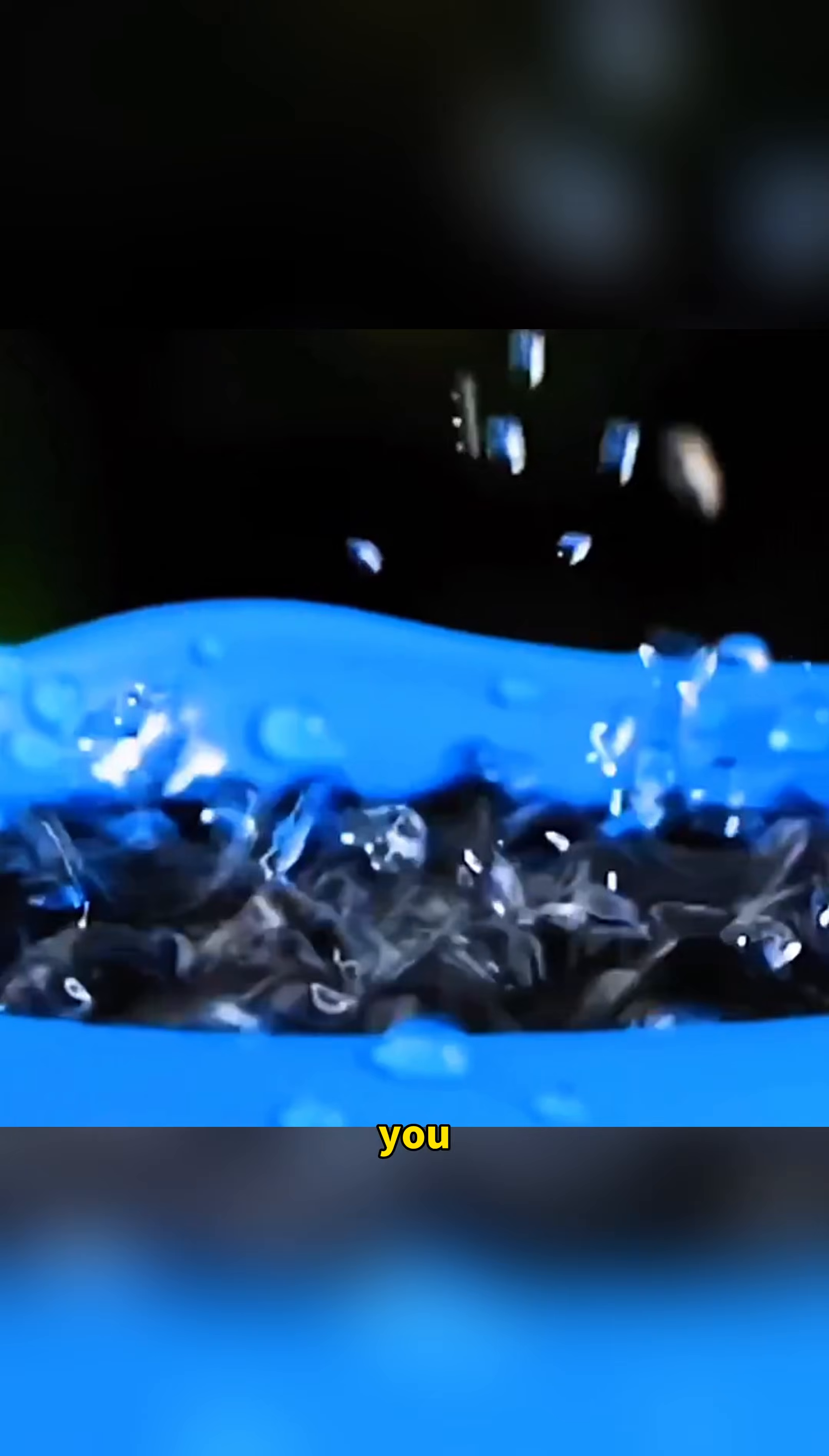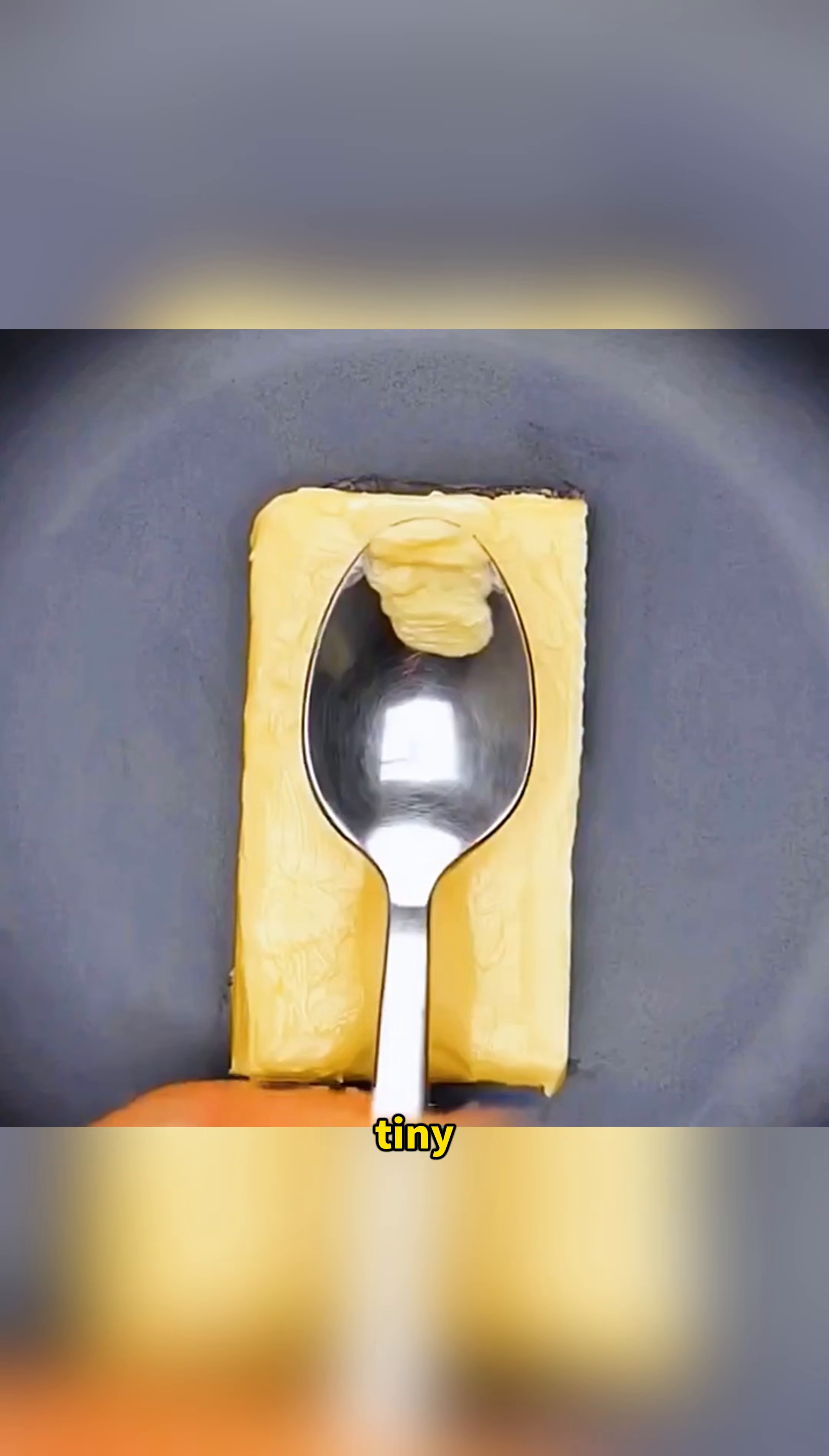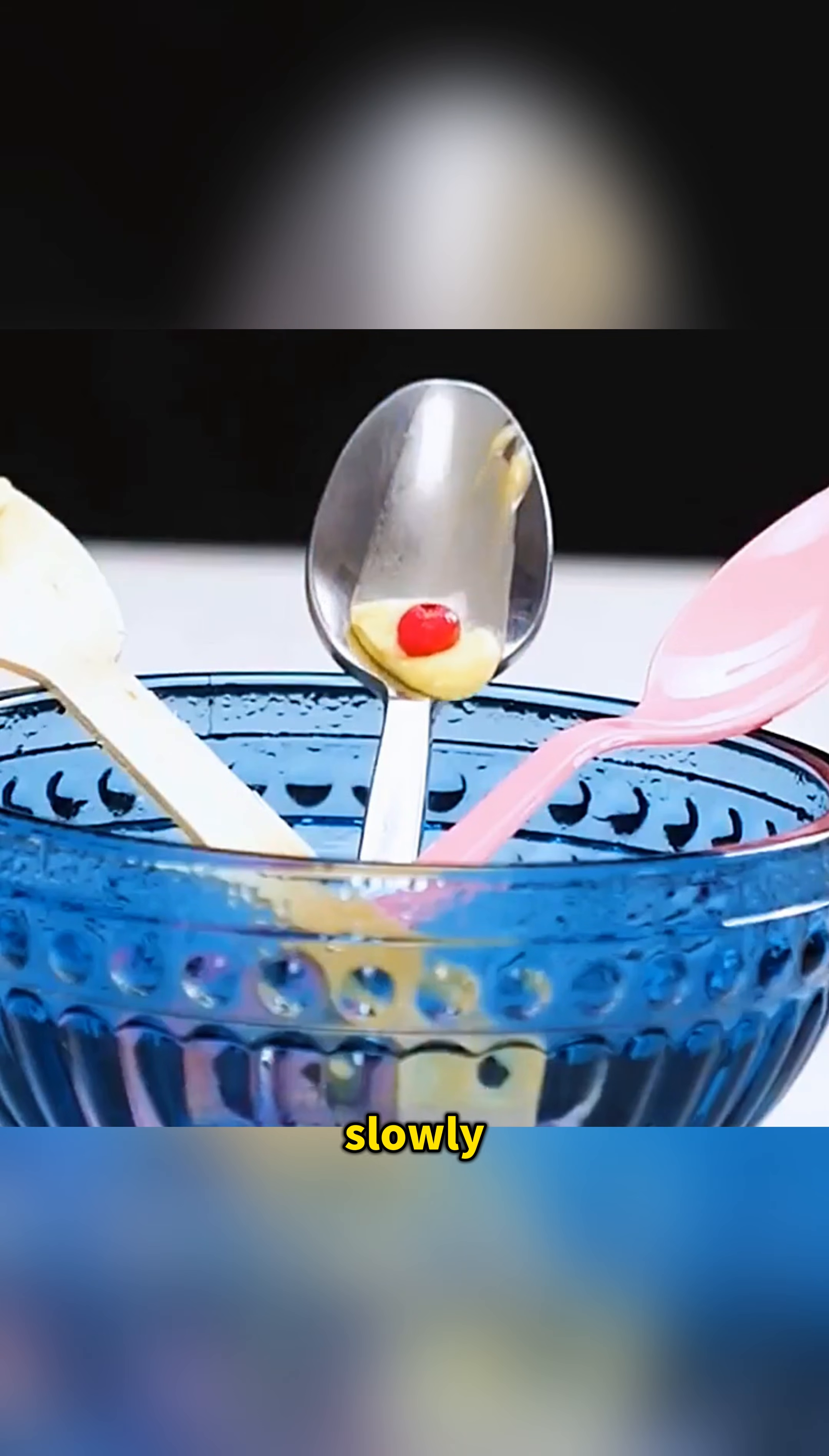Scoop a bit of cream with the tip of a spoon and place a tiny cherry on top as decoration. Set them in a bowl and pour in hot water so the cream and cherry slowly slide down into the bowl all by themselves.